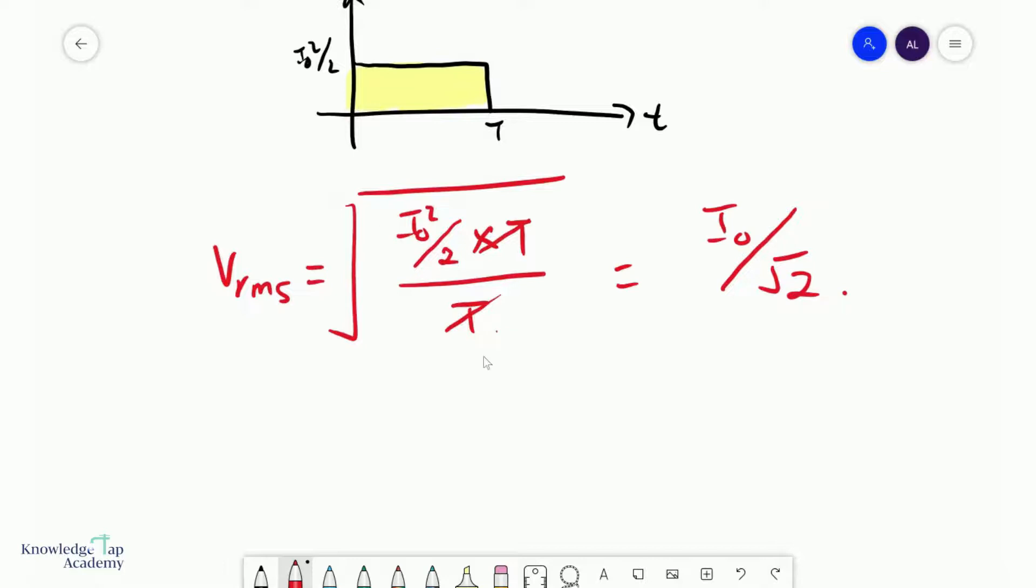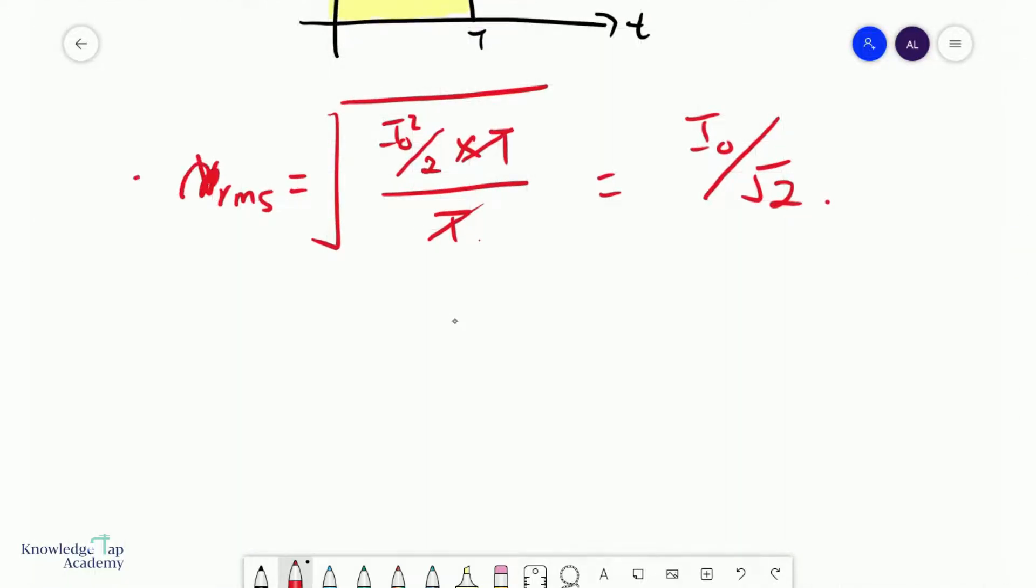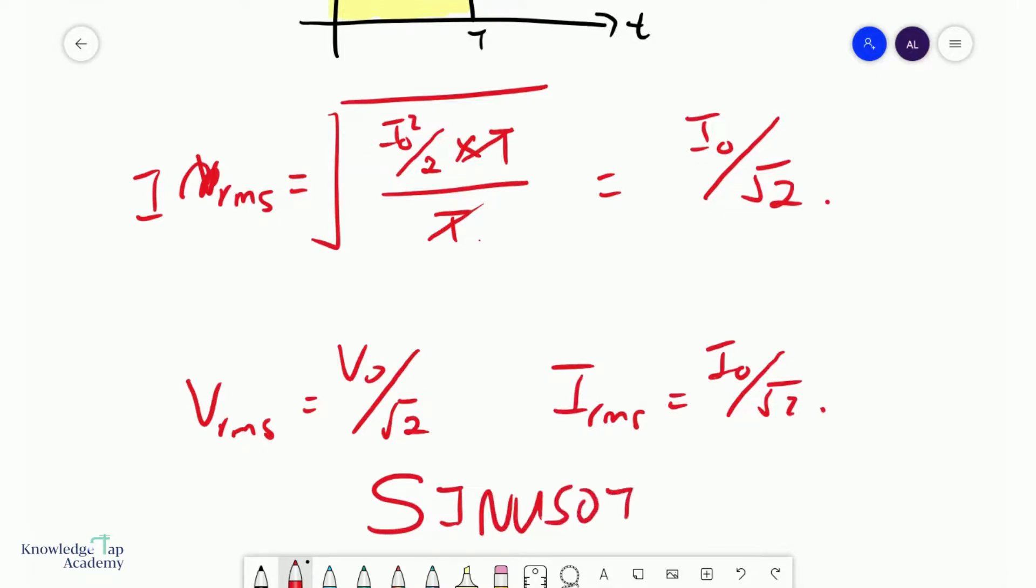And so, for a sinusoidal source, oh, it's IRMS, sorry. VRMS is its peak value over square root 2. And indeed, IRMS is the peak current over square root 2. But remember, this is only for sinusoidal sources.